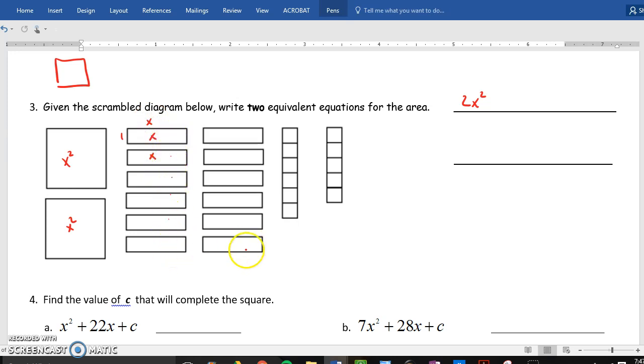...so each of these represent an x. How many of these do I have? 1, 2, 3, 4, 5, 6, 12. So, plus 12x. And then, 1, 2, 3, 4, 5, 6, 7, 8, 9, 10, 11. Plus 11.